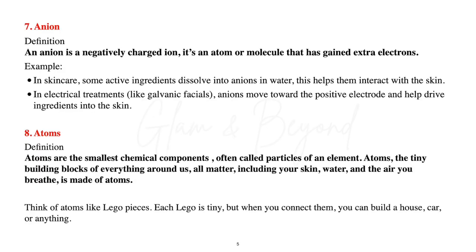Number seven, anion. An anion is a negatively charged ion — an atom or molecule that has gained extra electrons. In skincare, some active ingredients dissolve into anions in water, which helps them interact with the skin. In electrical treatments like galvanic facials, anions move towards the positive electrode and help drive ingredients deeper into the skin.